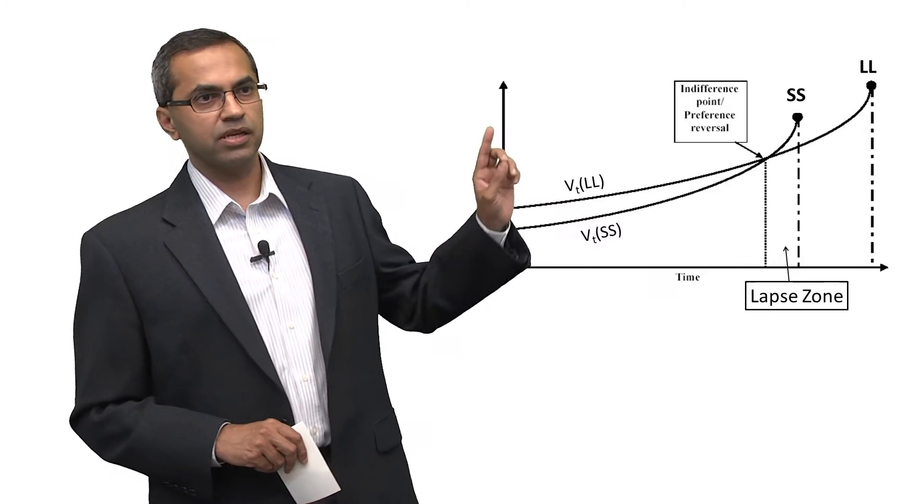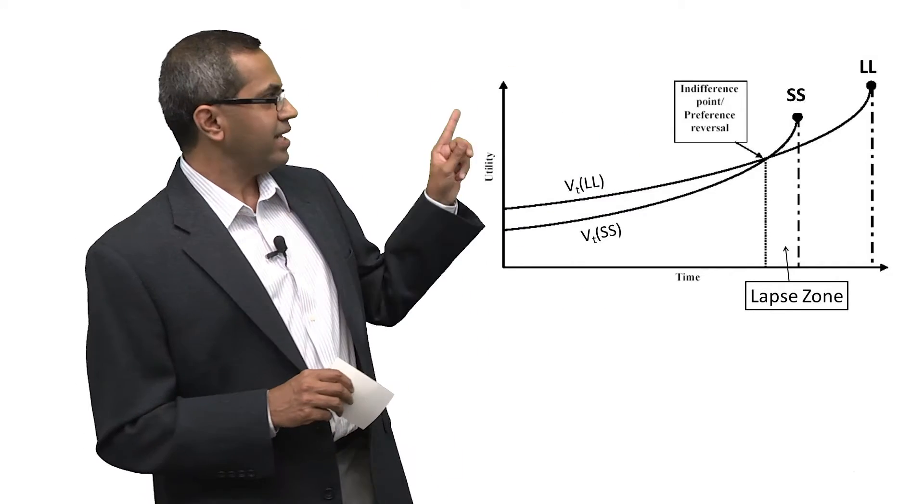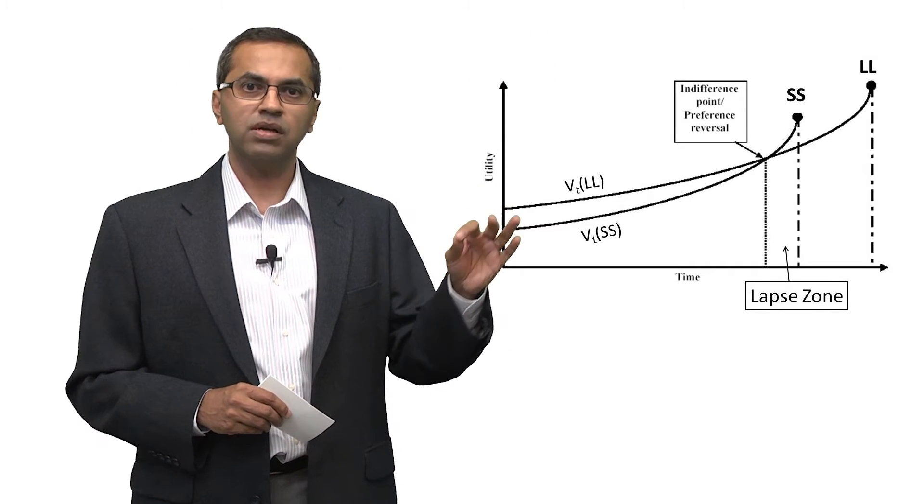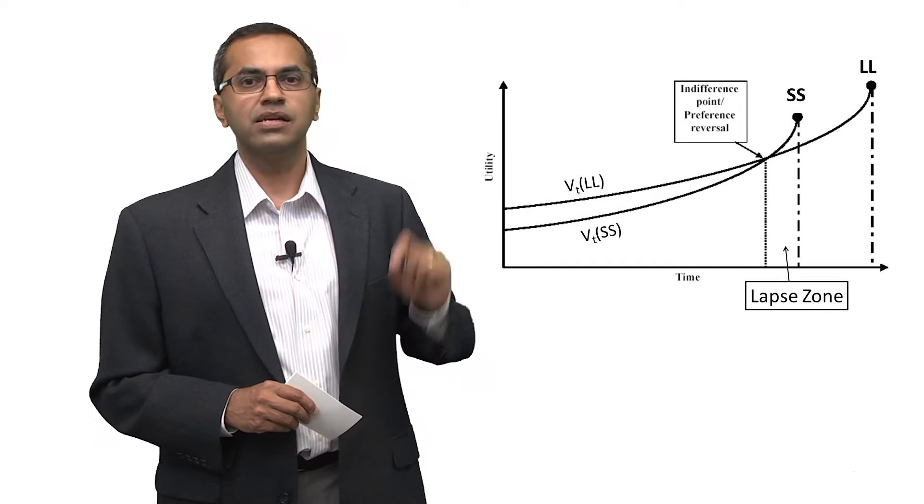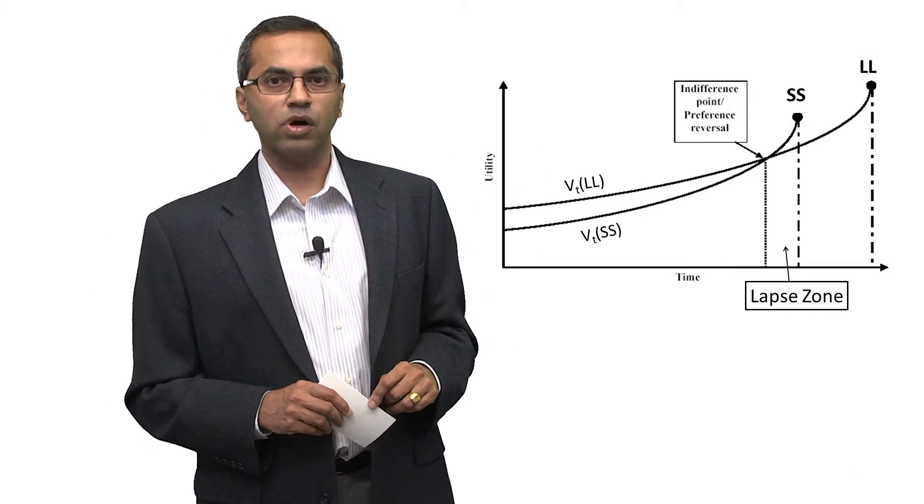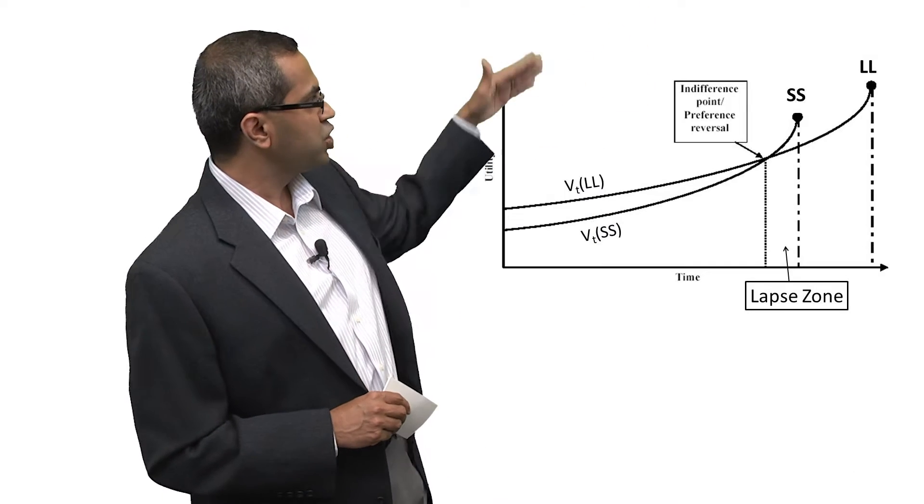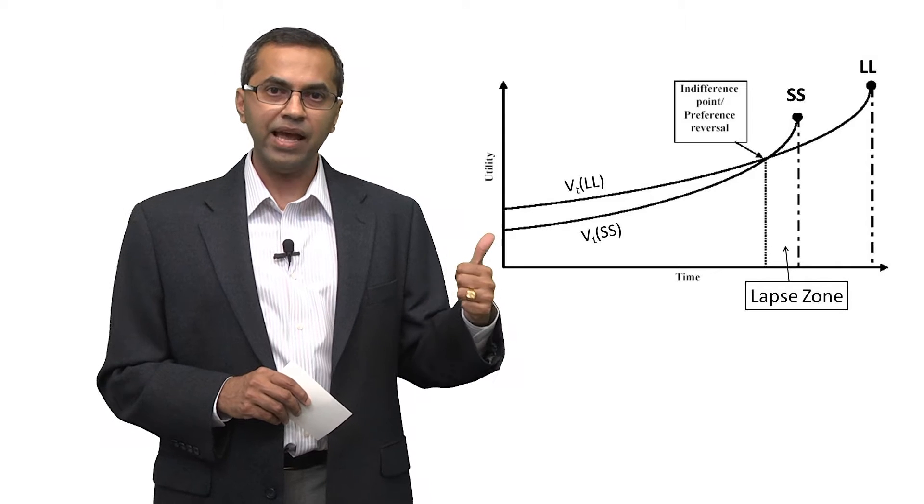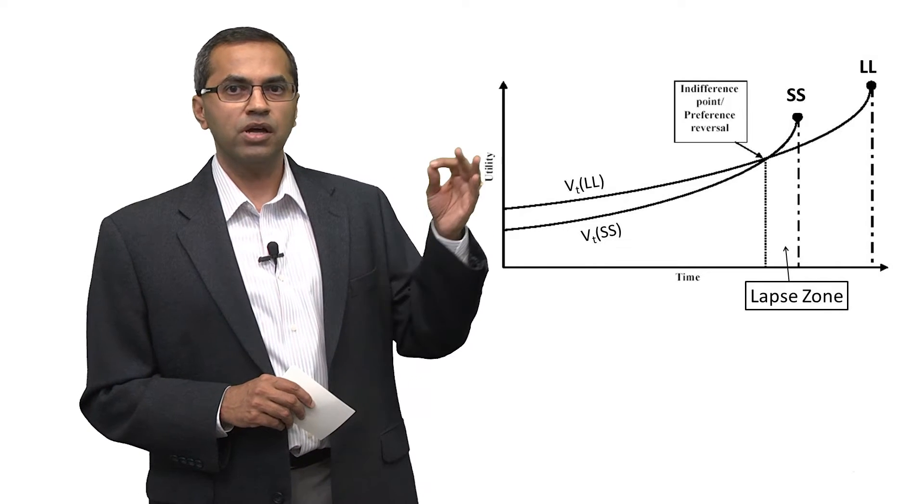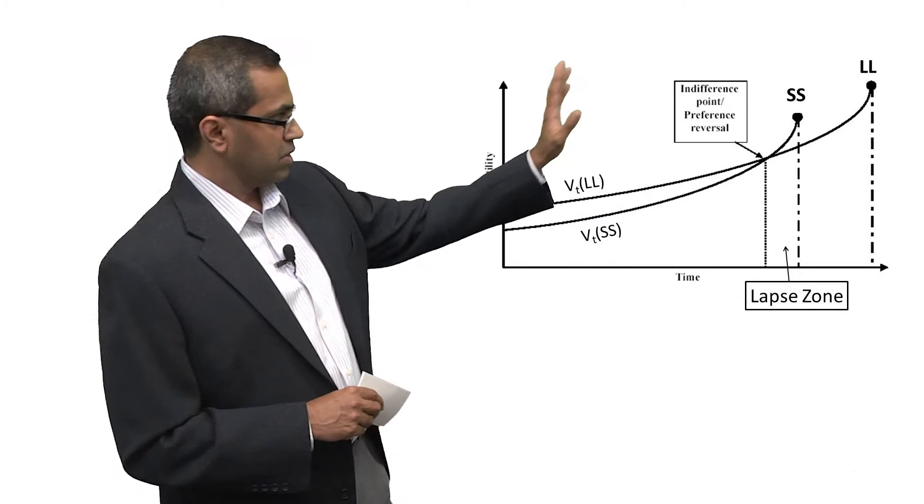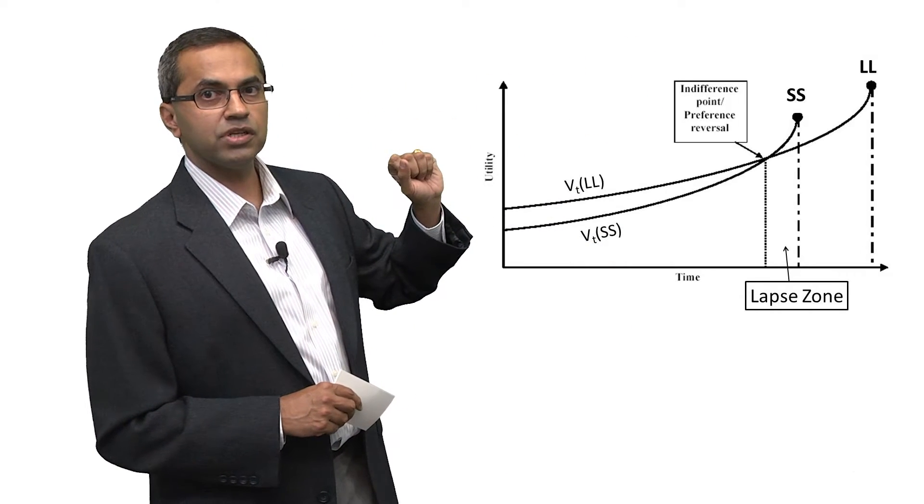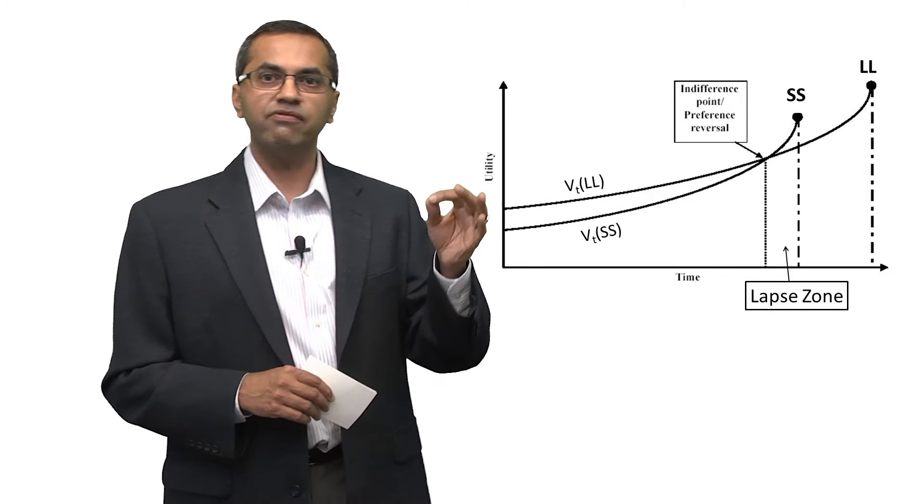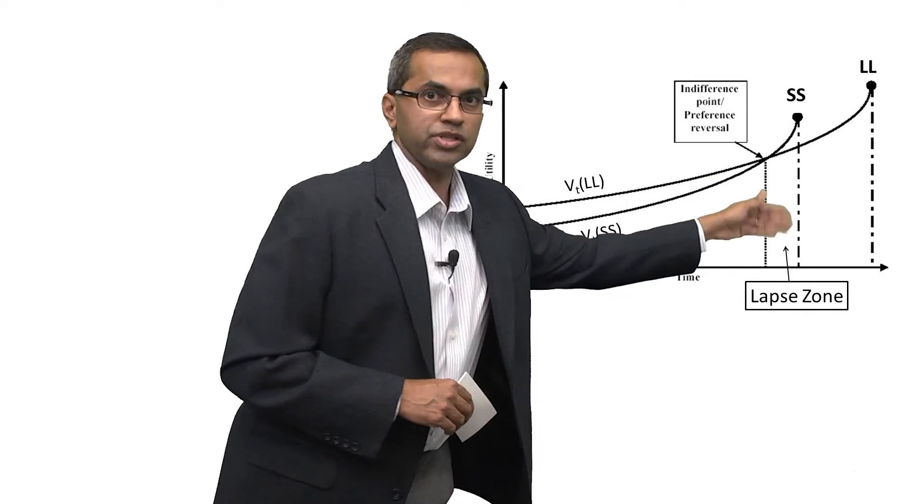That notion is captured in this graph. And what you're going to see in this graph is SS and LL. SS stands for the shorter, sooner reward, the $10. LL stands for the larger, later reward, the $12. And the two lines that you see coming from SS and LL, they're marked as VT(SS) and VT(LL), represent the present value of the future outcome. So for example, SS and LL are happening in the future. I'm standing here and I'm looking at them. And the two lines represent how I value SS and LL at different points in time.